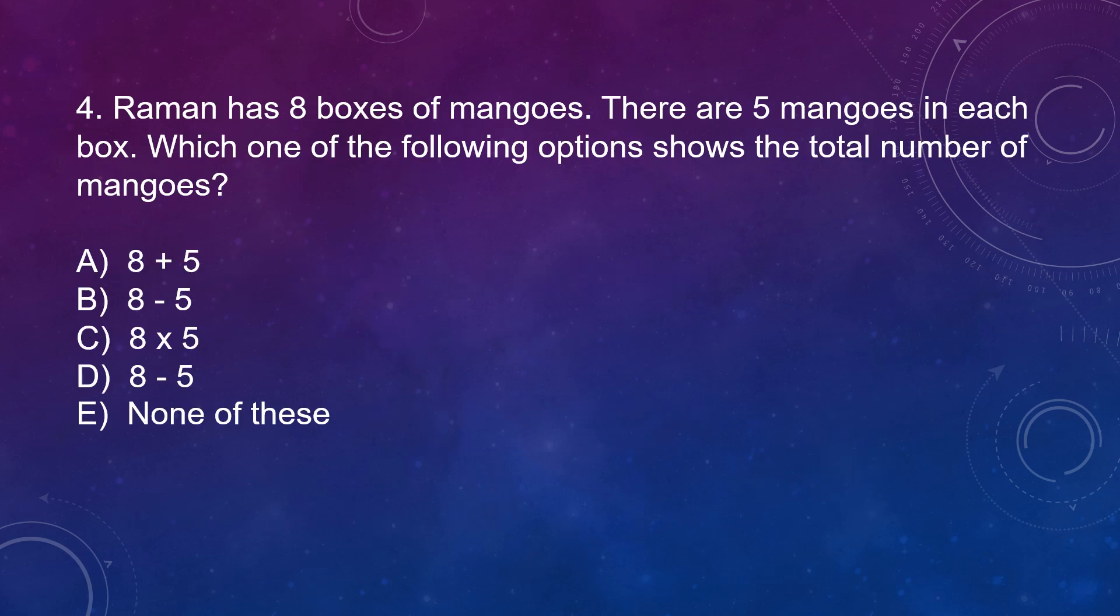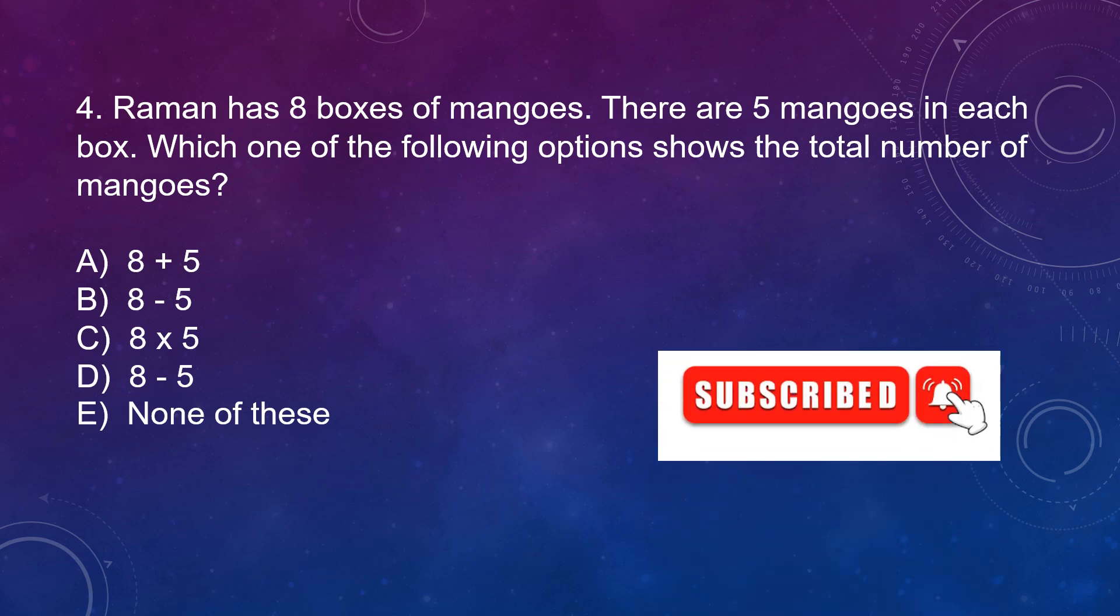Question number 4: Raman has 8 boxes of mangoes. There are 5 mangoes in each box. Which one of the following options shows the total number of mangoes? Option A: 8 plus 5, Option B: 8 minus 5, Option C: 8 multiplied by 5, Option D: 8 divided by 5, Option E: none of these. It is given that Raman has 8 boxes of mangoes and each box has 5 mangoes. Total mangoes are 8 multiplied by 5. Correct answer is option C.